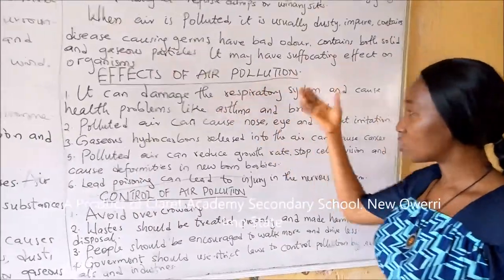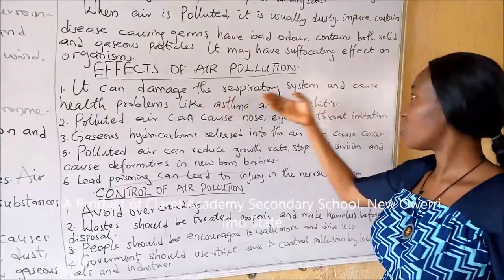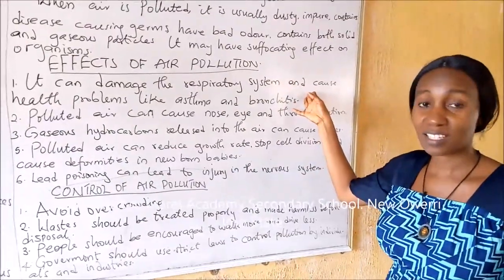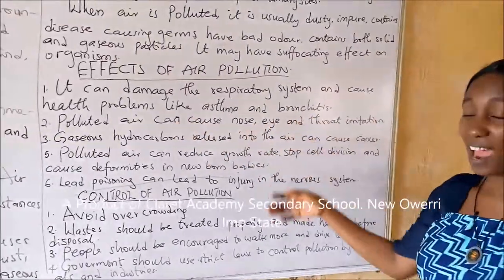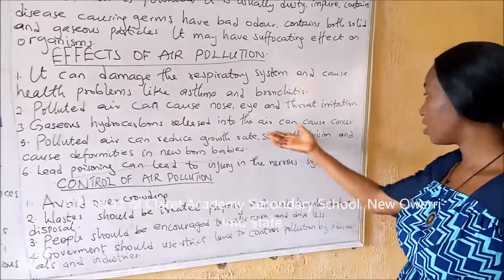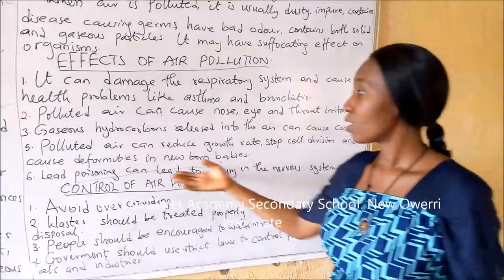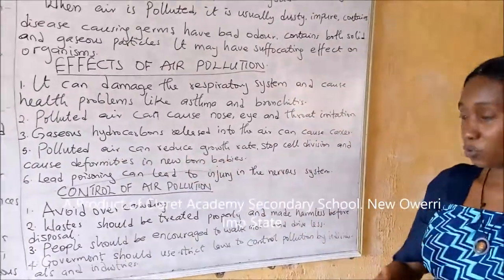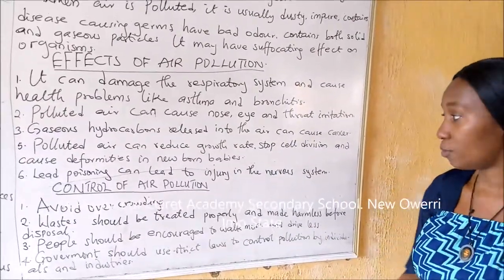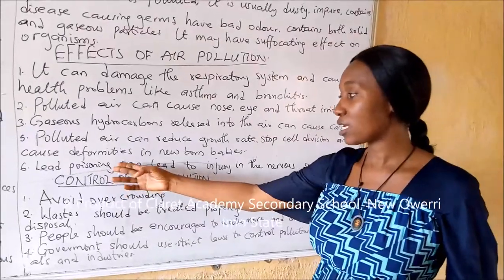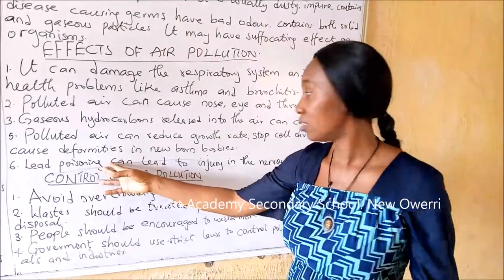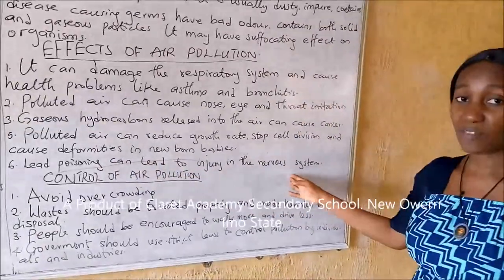Effects of air pollution: it can cause damage to the respiratory system, linked to health problems such as bronchitis and asthma. Polluted air can cause eyes, nose, and throat irritation. Gaseous hydrocarbons which are released can cause cancer. Polluted air will also reduce growth rates, stop salivation, and cause deformities in newborn babies. Lead poisoning, which can be gotten when you use lead-infused fuel, will also lead to injury in the nervous system.